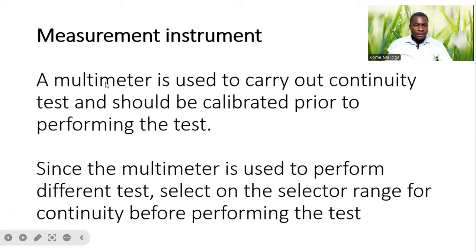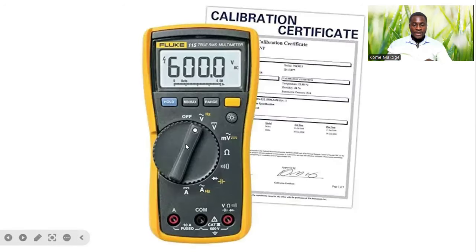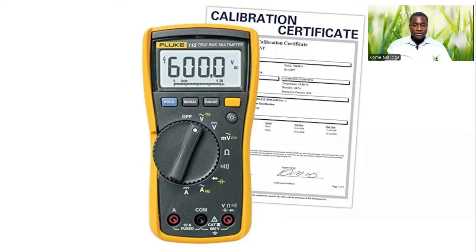Regarding the measurement instrument: a multimeter is used to carry out continuity tests and should be calibrated prior to performing the test. While you get your measuring equipment or instrument, you have to make sure that they are all calibrated prior to carrying out any tests on site. Since the multimeter is used to perform different tests, select the selector range for continuity before performing the test.